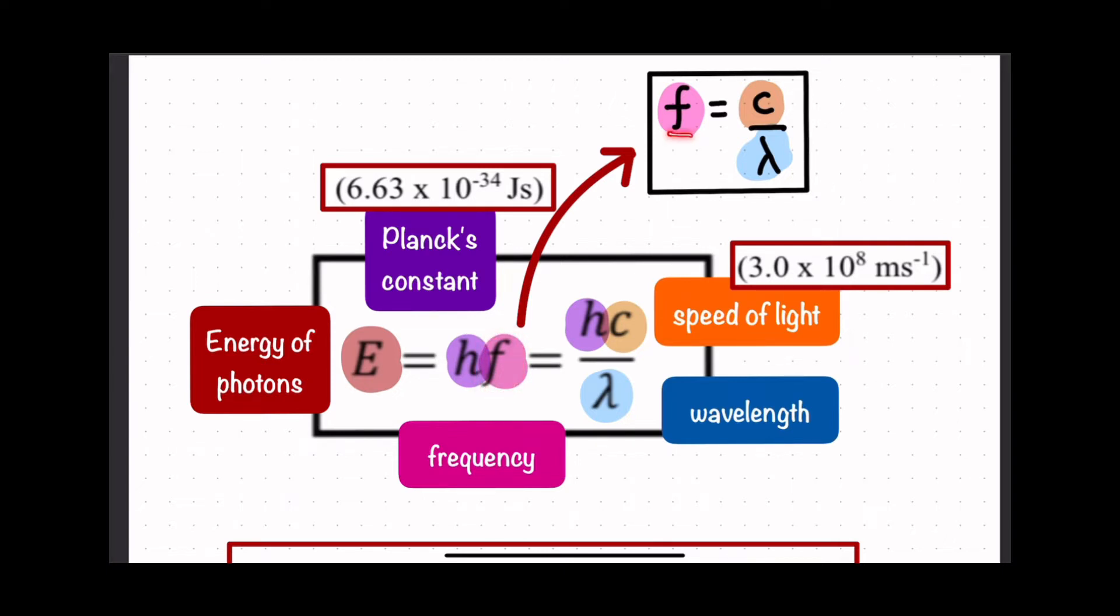Frequency is equal to speed of light divided by wavelength of light. When you expand this formula and substitute into the equation, we get hc over lambda, where h is Planck's constant, c is speed of light with value 3 times 10 to the power of 8 meters per second, and lambda is the wavelength of light.